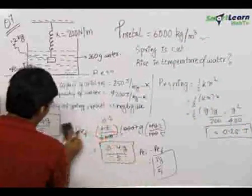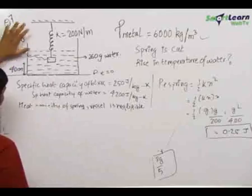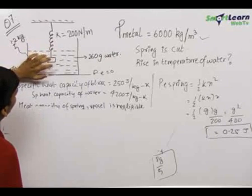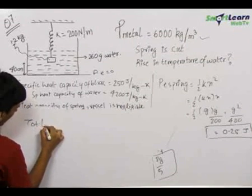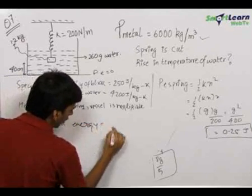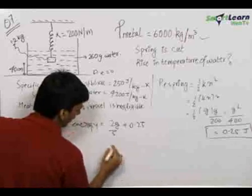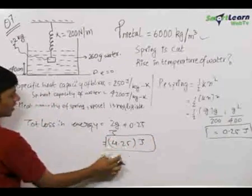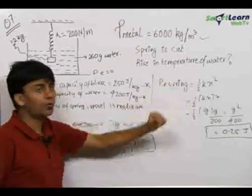Now we can find the total loss in energy. The spring loses 0.25 J of potential energy. The block-water system also loses 2g/5 of potential energy. So the total loss in energy = 2g/5 + 0.25 joules = 4.25 joules. This is the amount of energy lost, and it is used to raise the temperature of the water and block system.